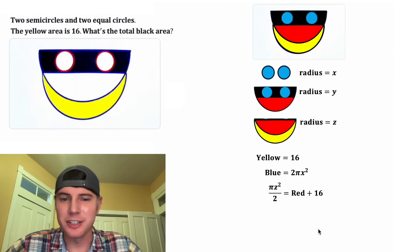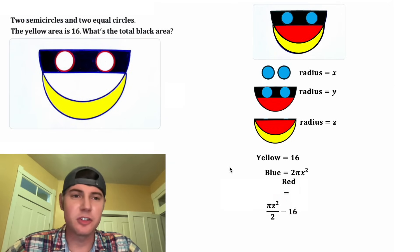And then let's get the red by itself. So let's subtract 16 from both sides of the equation. And that'll give us red is equal to pi Z squared over two minus 16. And I kinda like the colors on this side, so let's swap them.